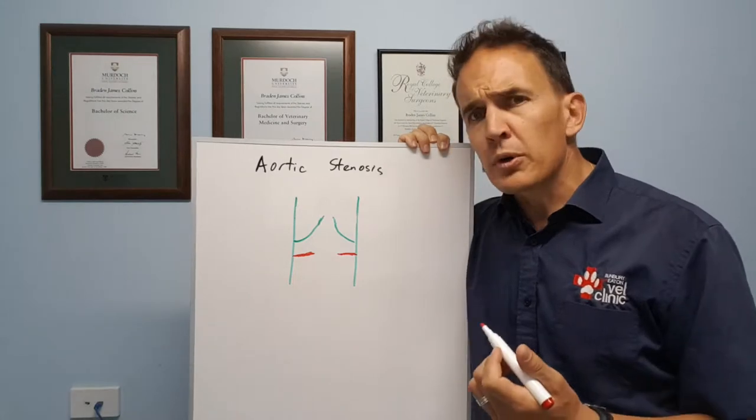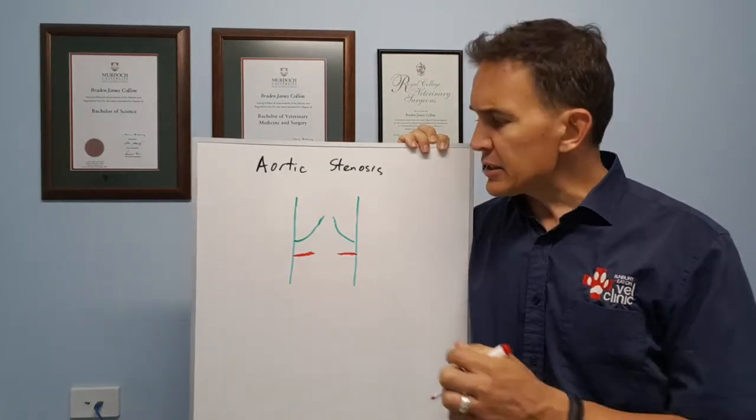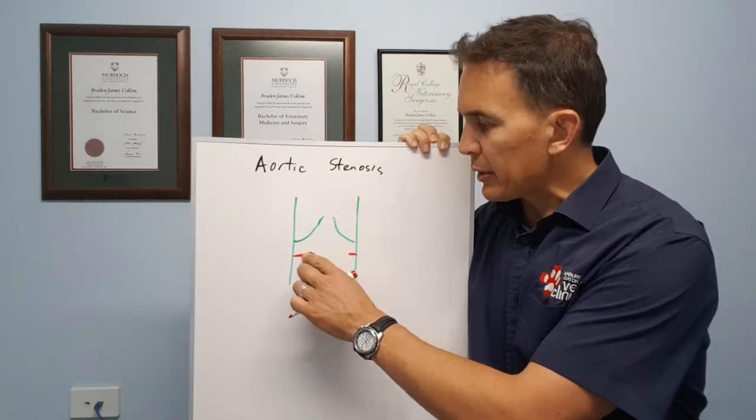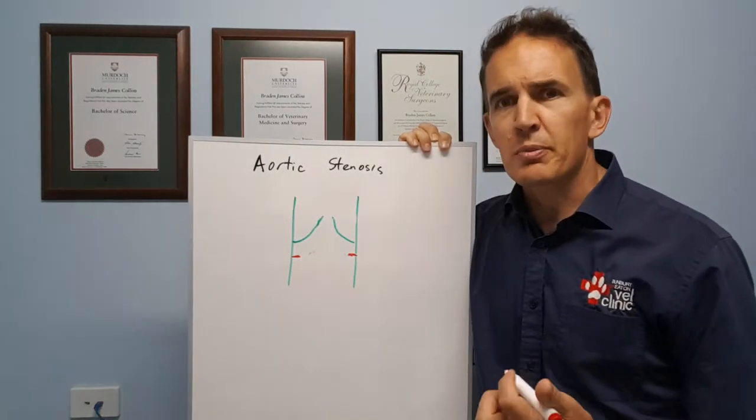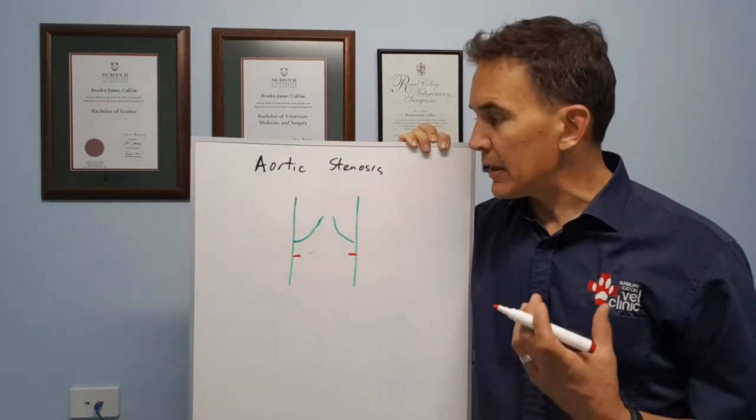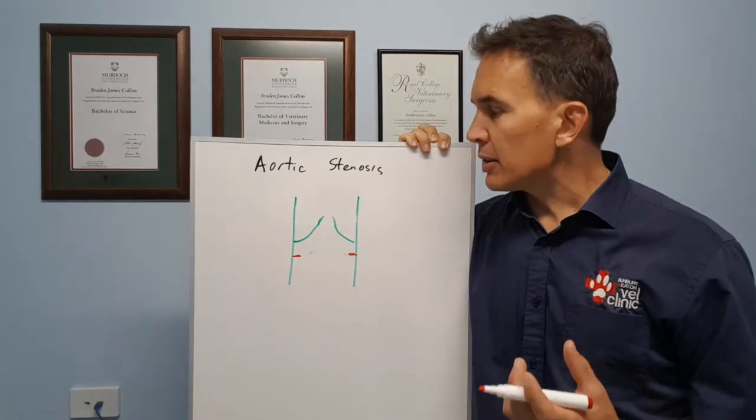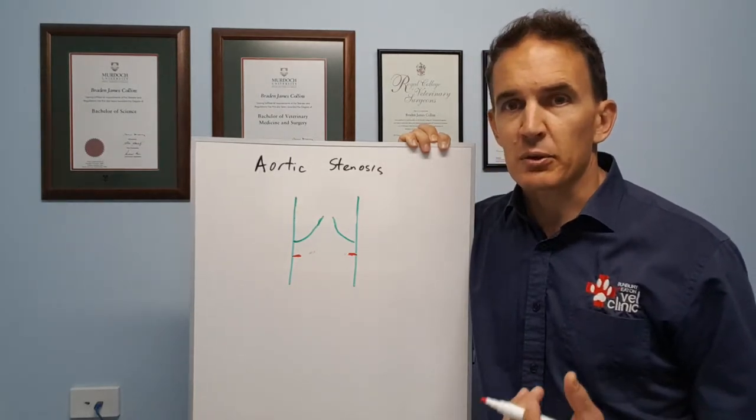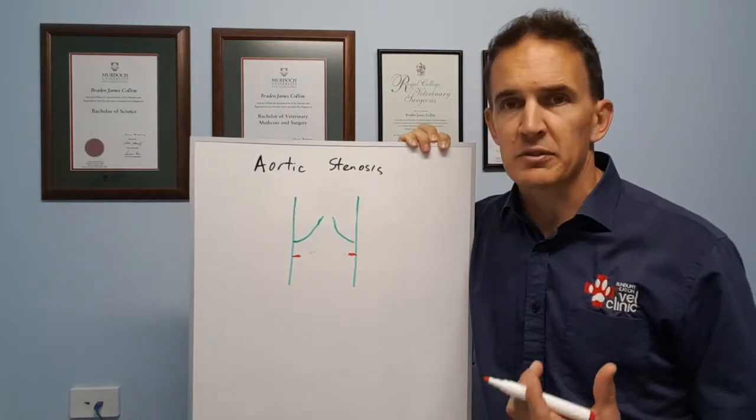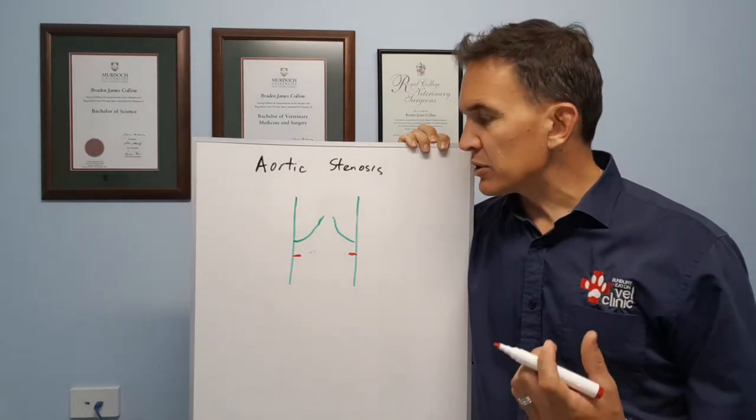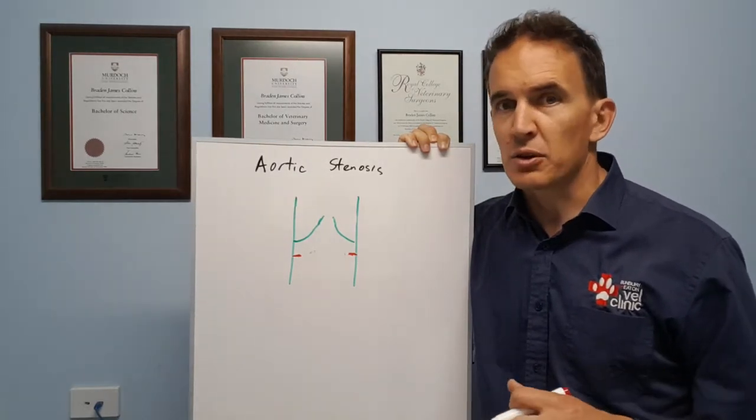For very mild cases we might just have a very small narrowing of the aorta and that might just cause a bit of turbulence that we can pick up as a heart murmur, but it doesn't actually cause any clinical signs or symptoms for the dog. The dog lives a normal happy life and they carry on as a normal dog would.